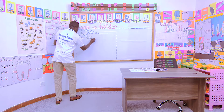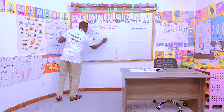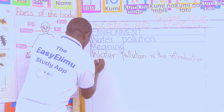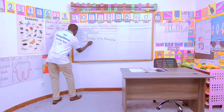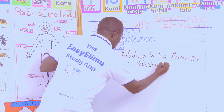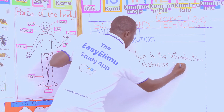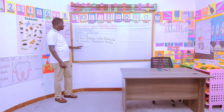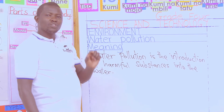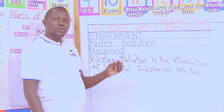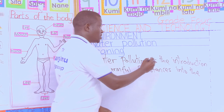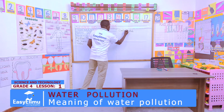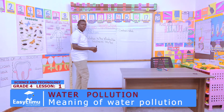Water pollution is the introduction of harmful substances into the water. And once we introduce harmful substances into the water, we say the water is contaminated. Contaminated water is water which has been introduced with harmful substances.